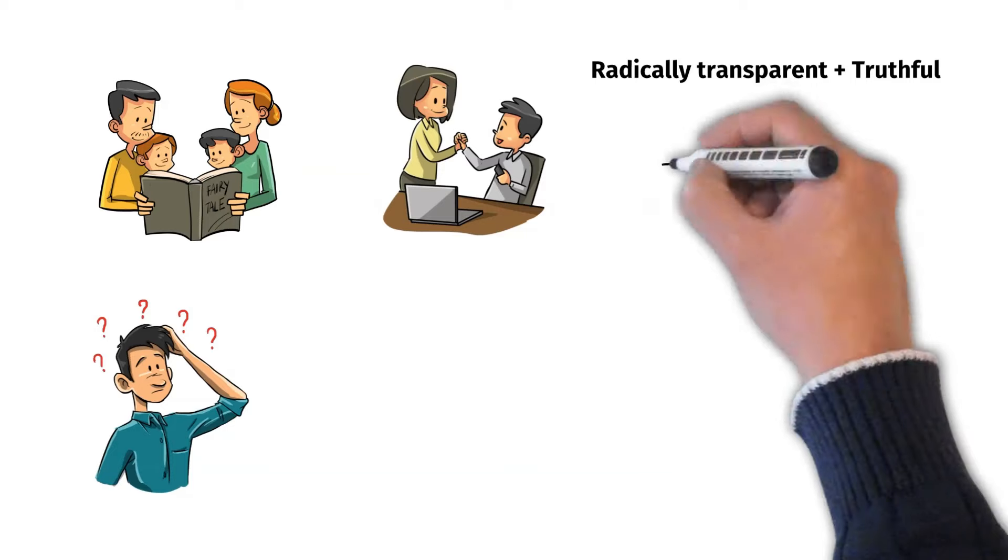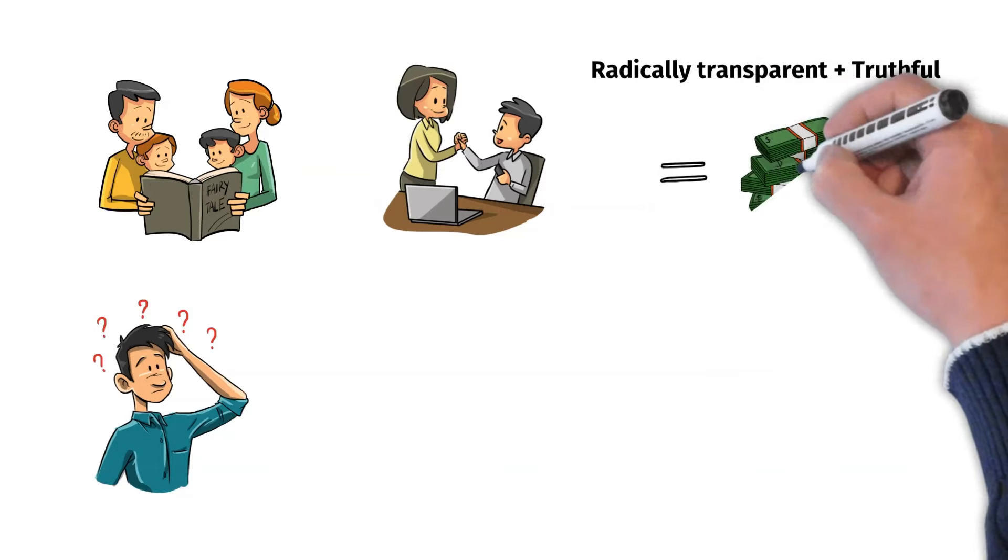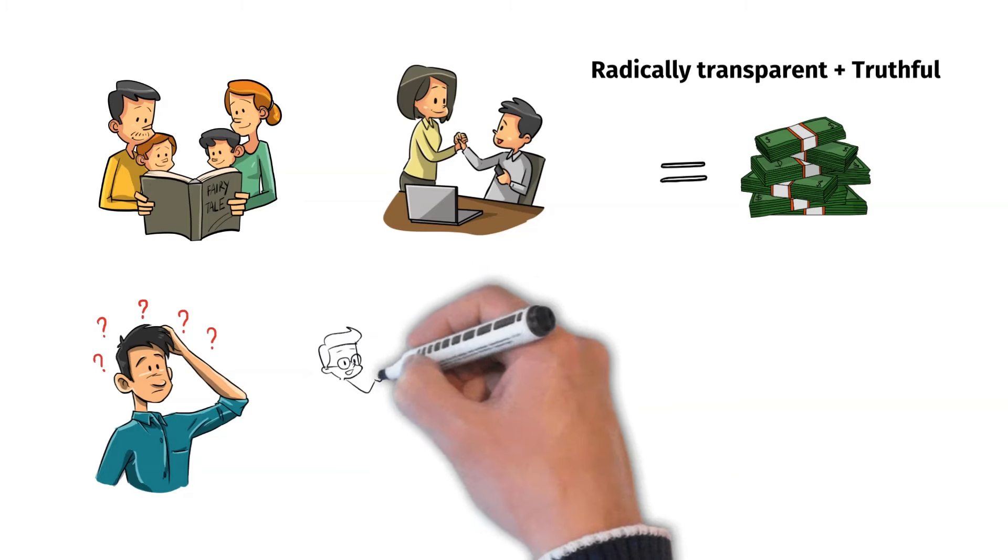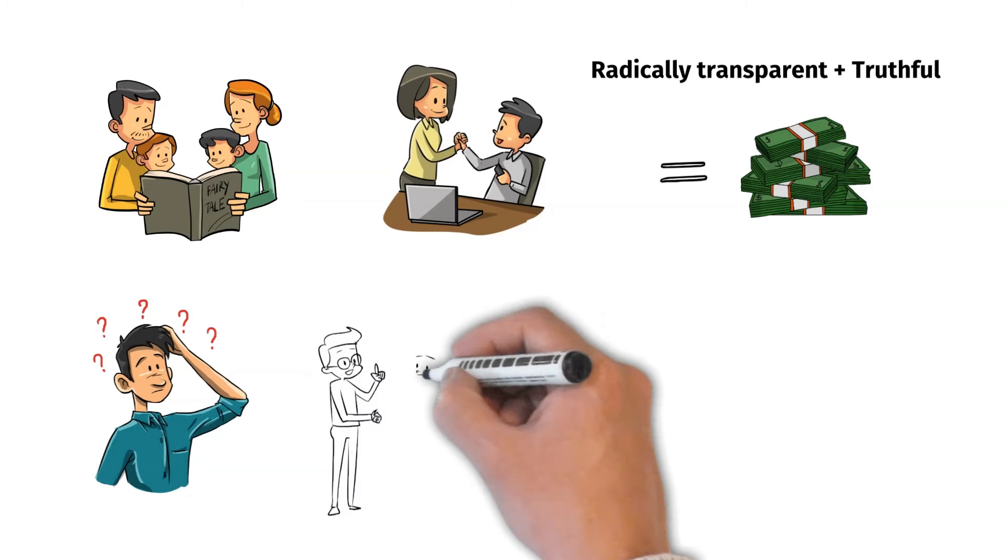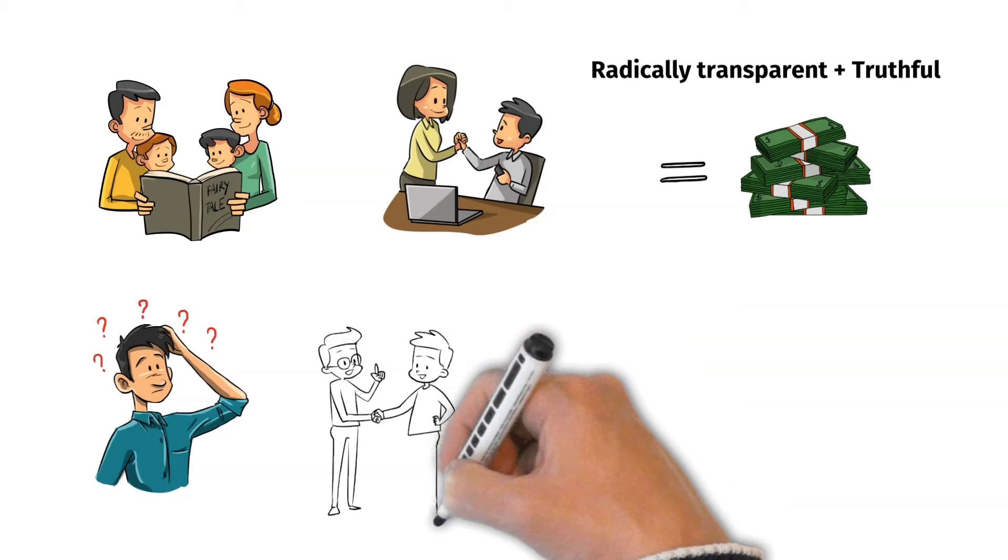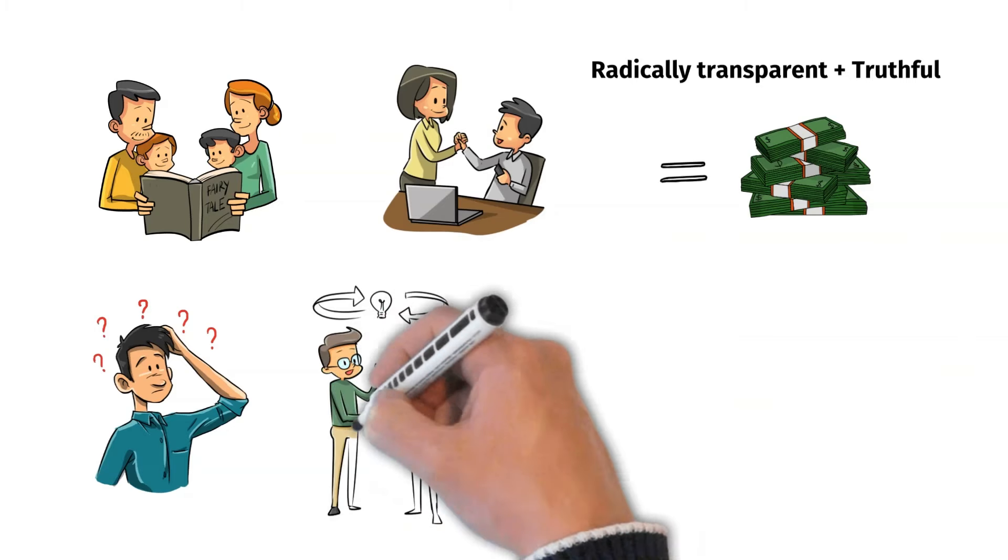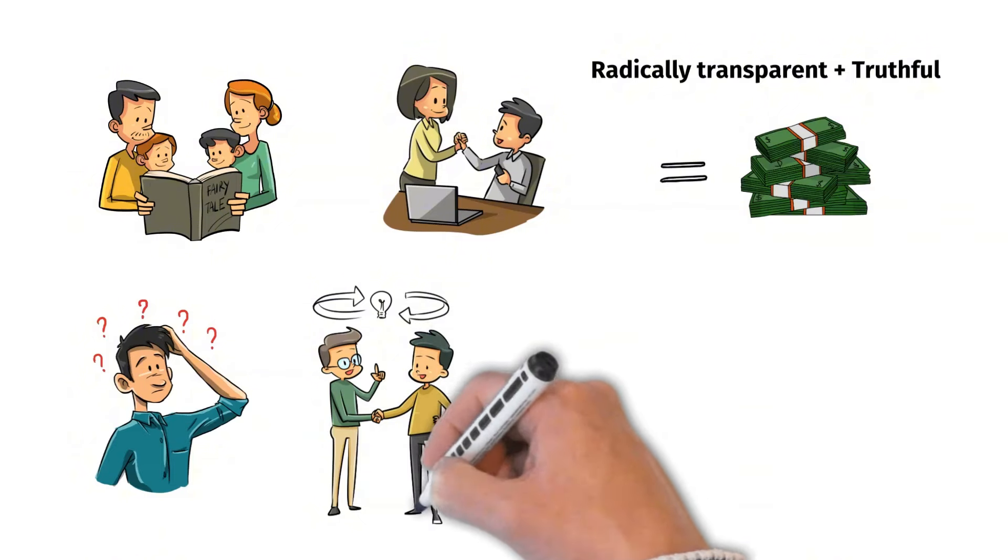Being radically transparent and truthful in business can lead to greater profitability. By openly and honestly sharing information with employees, customers, and other stakeholders, you can build trust, reduce misunderstandings, and cultivate a culture of honesty and integrity.